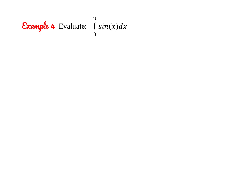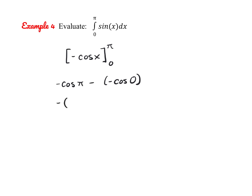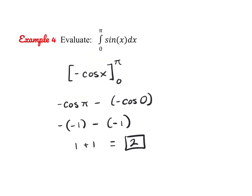Let's try the integral from 0 to π of sin(x) dx. The antiderivative of sin(x) is −cos(x), evaluated from 0 to π. So we compute −cos(π) minus −cos(0): that's −(−1) minus −(1) = 1 + 1 = 2.